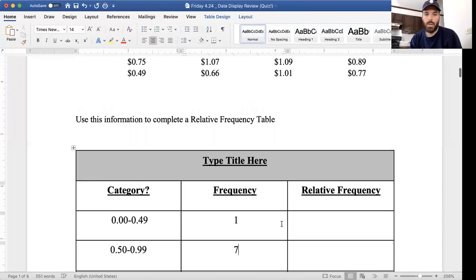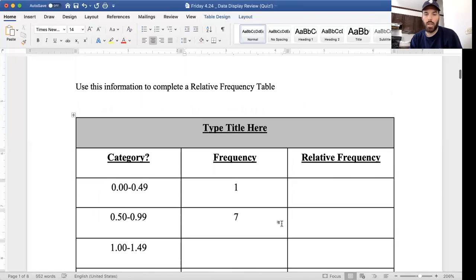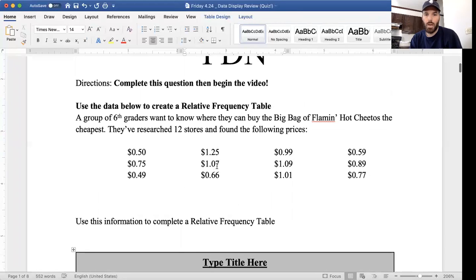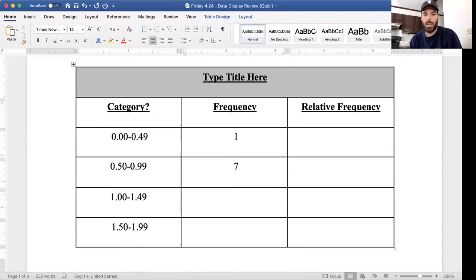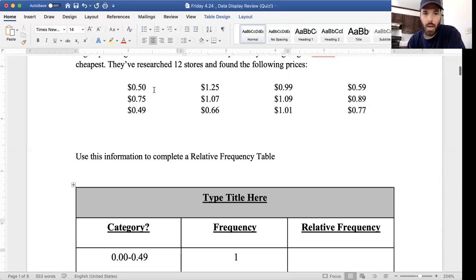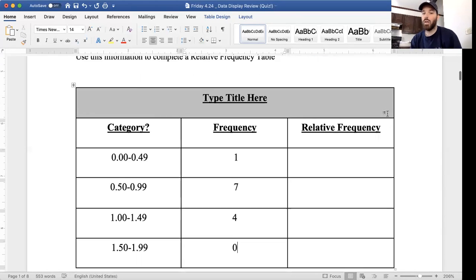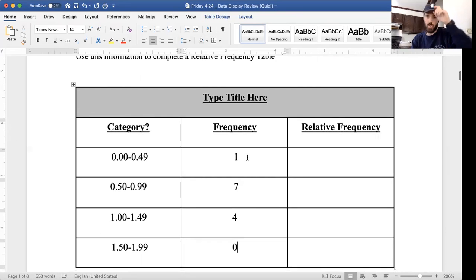$1 to $1.49: one, two, three, four. And $1.50 to $1.99, there's actually zero. So if you didn't include this interval, no problem at all. Up here I had one, two, three, four, twelve altogether. So make sure there's 12 down here. One plus seven is eight, eight plus four is 12, 12 plus zero is 12.